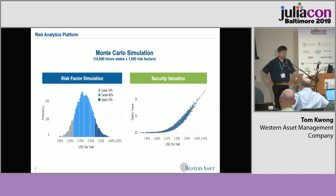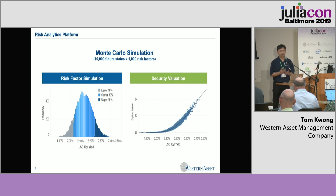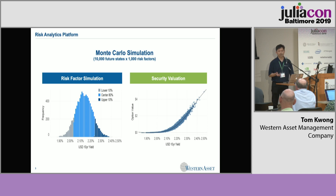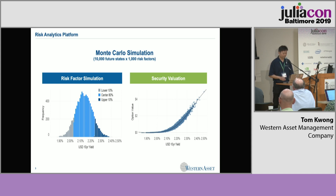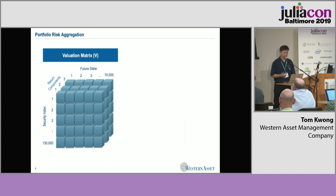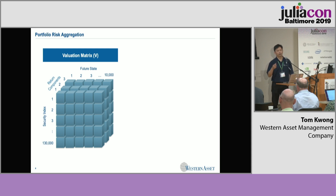In our risk management use case, we run a Monte Carlo simulation. We have to predict 10,000 future scenarios across almost 1,000 risk factors. These risk factors are modeled by highly talented PhDs who work through the time series modeling and figure out how they should be behaving. At the end of the day, we have 10,000 potential security returns for every security that we model every day. The magic comes from what we call the valuation matrix — a three-dimensional array that captures the security returns with different components such as systematic return or idiosyncratic return for all the securities and all the future states.